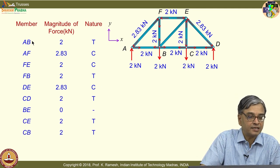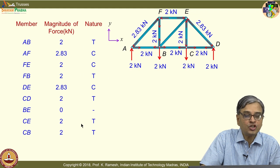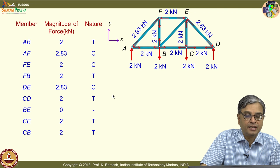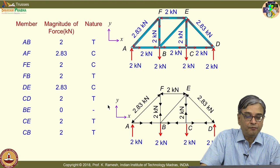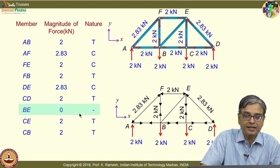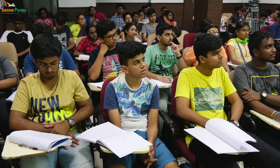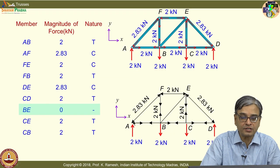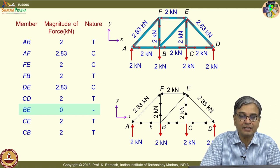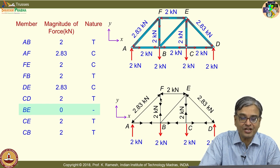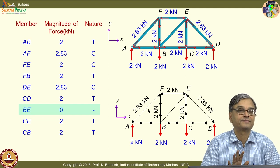This is how the final result is normally summarized in truss analysis. Members AB, AF, and so on are listed with their force values and nature — tension or compression. Zero force members are marked separately. Keep in mind: when arrows are shown with reference to the joint on the truss diagram, what appears physically as compression on the member is actually tension, and vice versa. This is the stress symbolism.